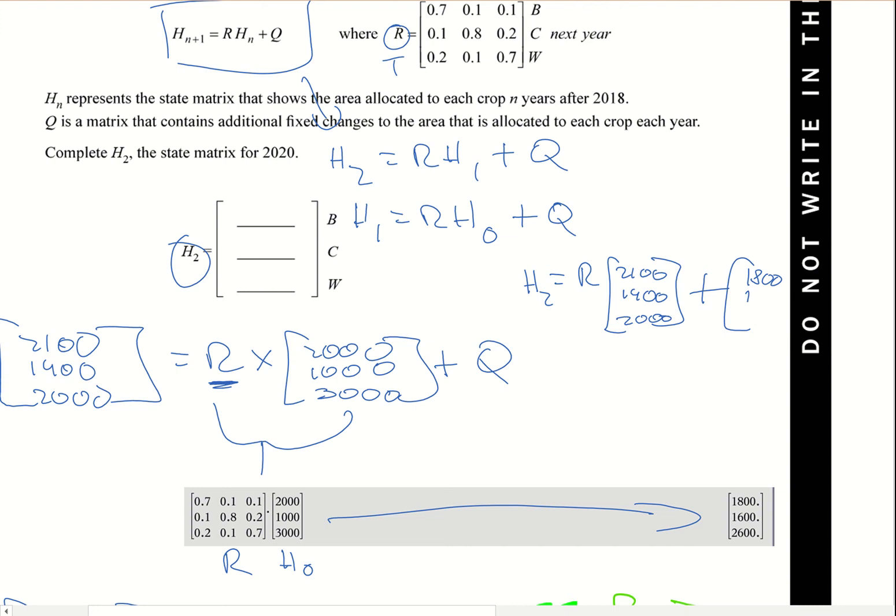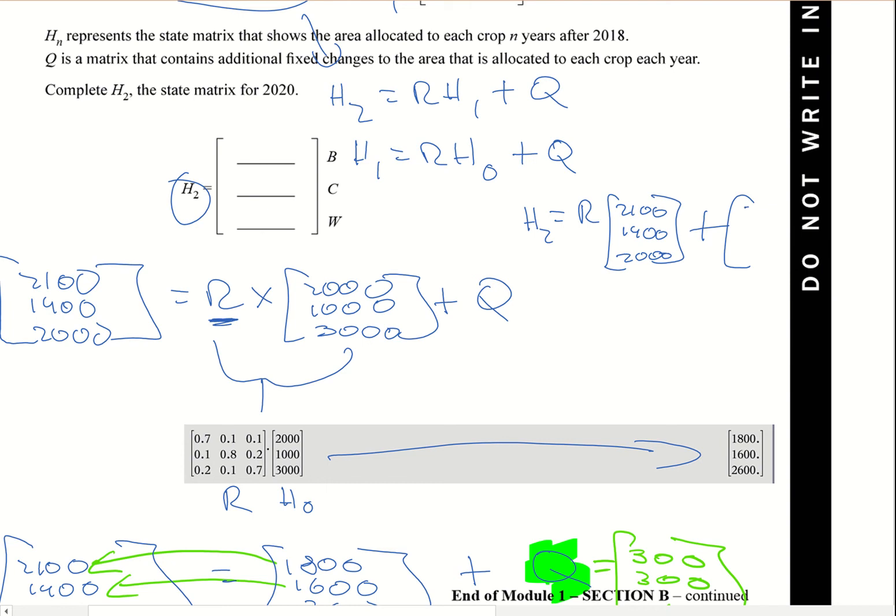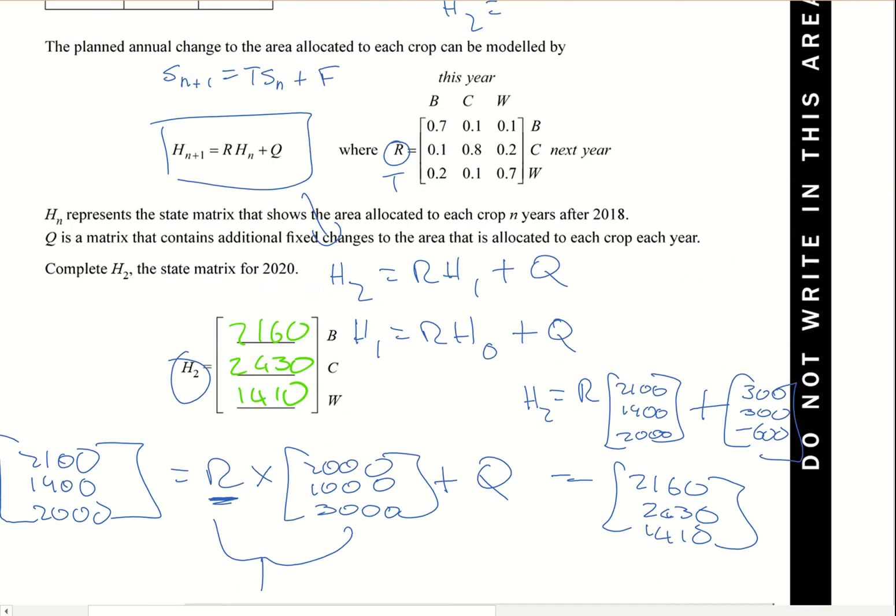And now we've got 300, 300, minus 600. When I do that - the transition matrix times h1 plus that forcing term - that will give me an answer of 2160, 2430, and 1410. So if we're going to put that in our answer, we'd go 2160, 2430, and 1410.